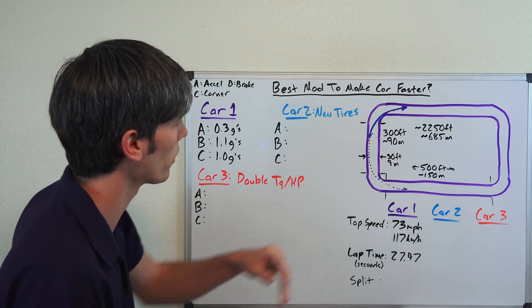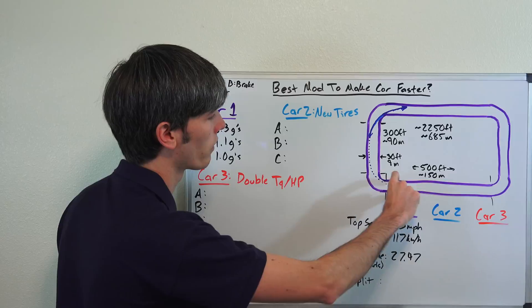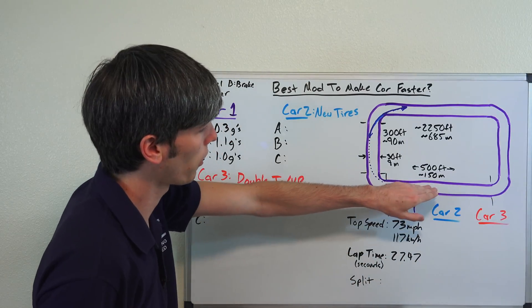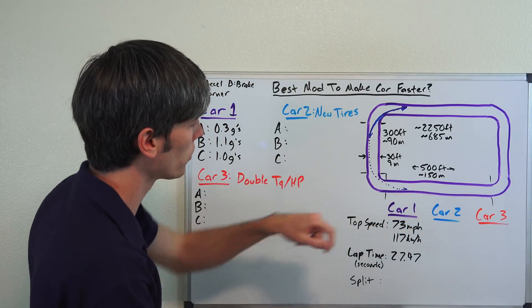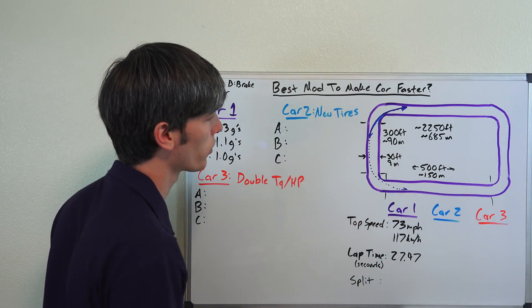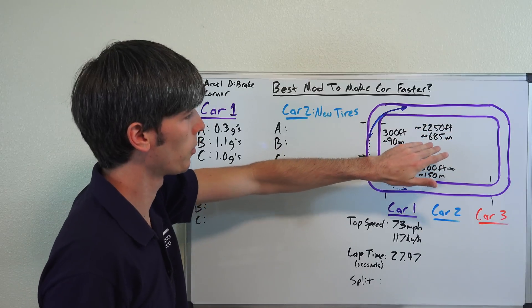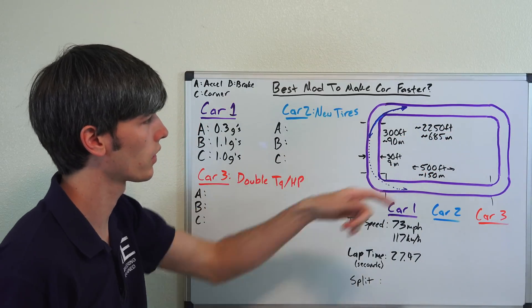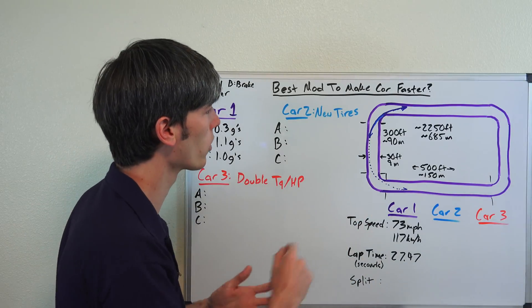Each one of these longer straights is about 500 feet or 150 meters. We've got a width of about 30 feet or 9 meters, and the total track length is about 2,250 feet or 685 meters. So you'll notice it is a fairly tight course, but you do have these decent straights to get up to speed.